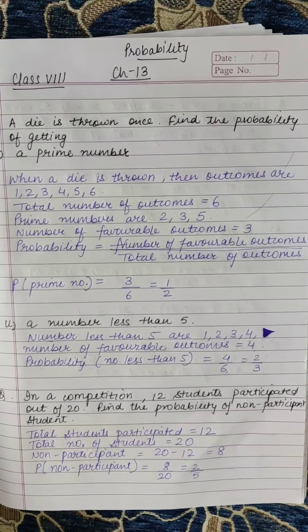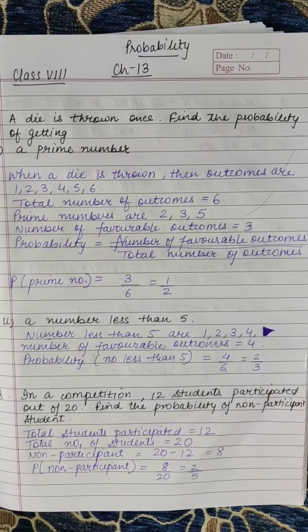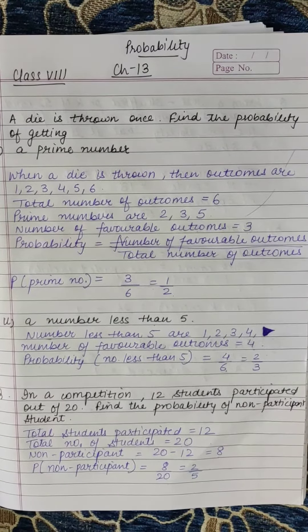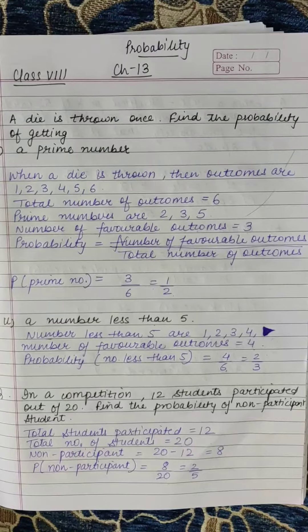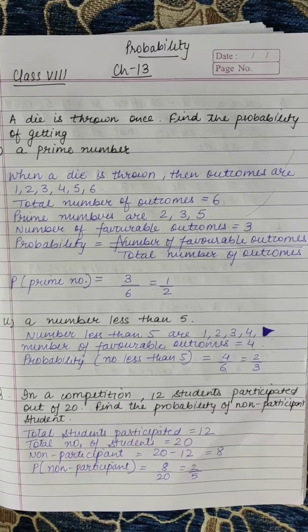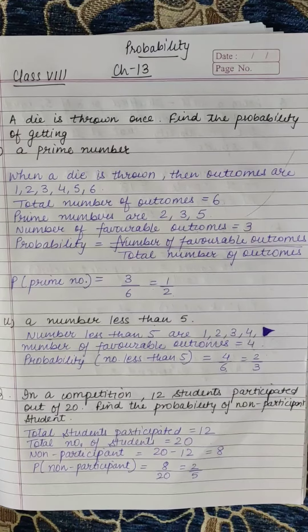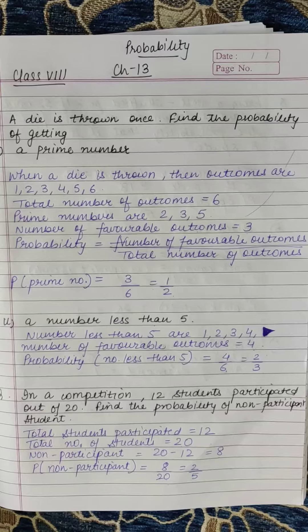Good morning. Class 8, Chapter 13, Probability. Question number 1: a die is thrown once. Find the probability of getting a prime number.